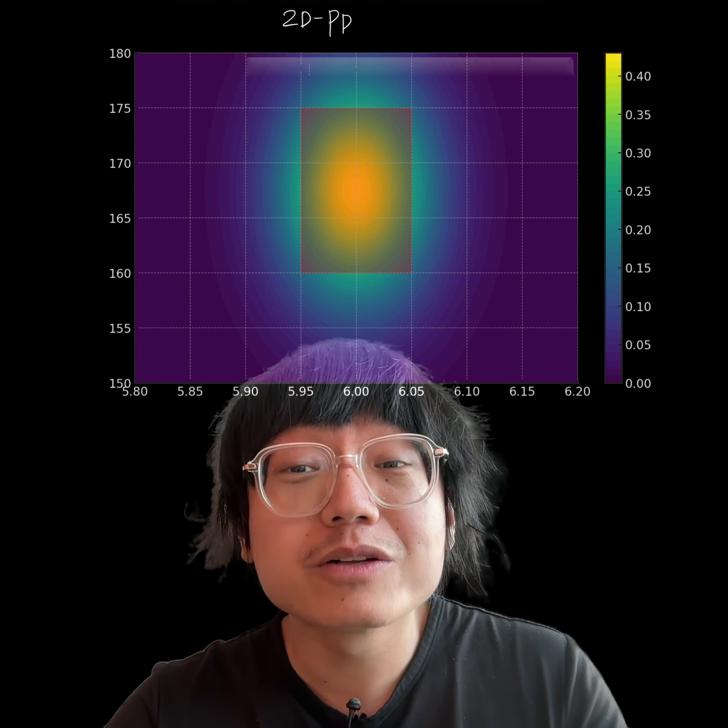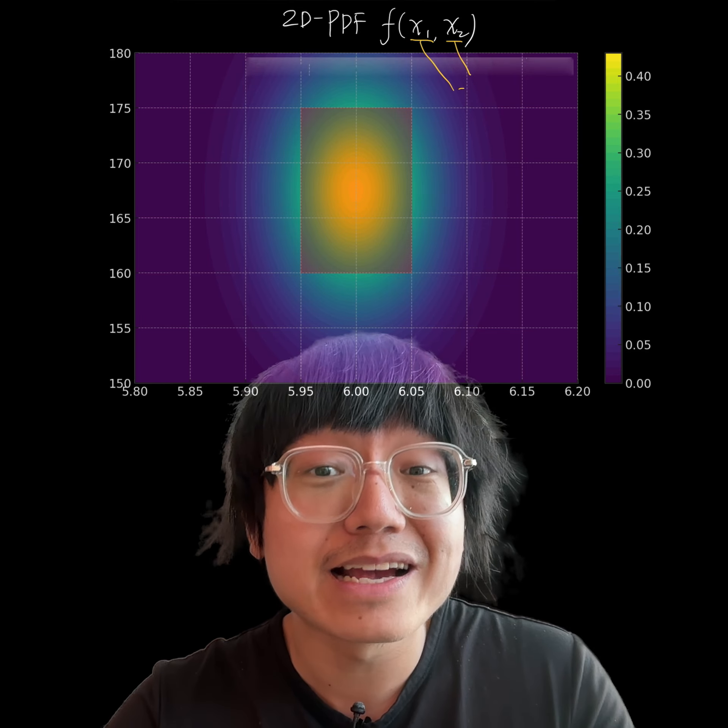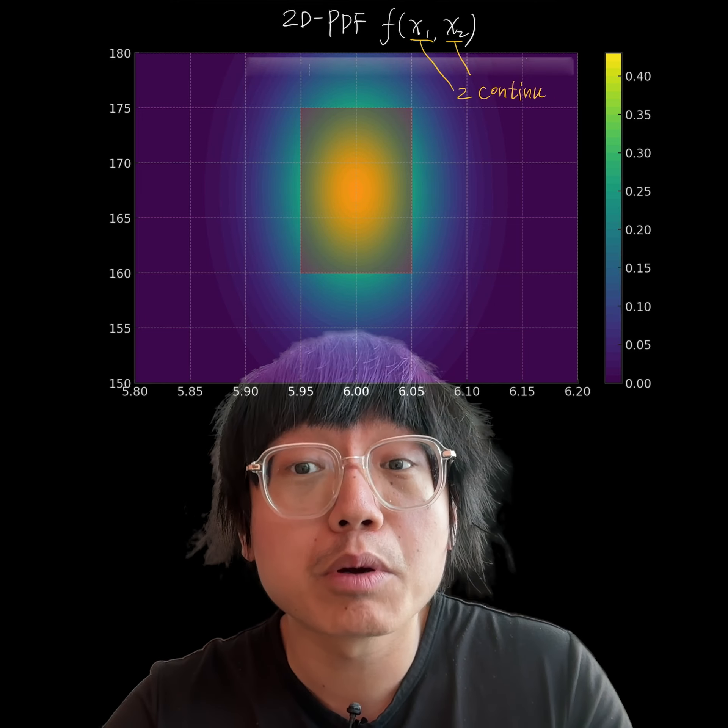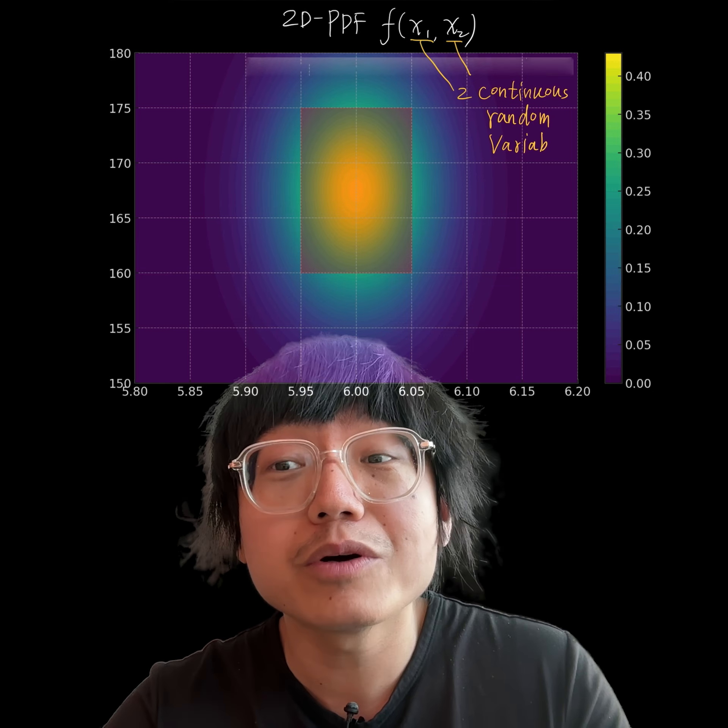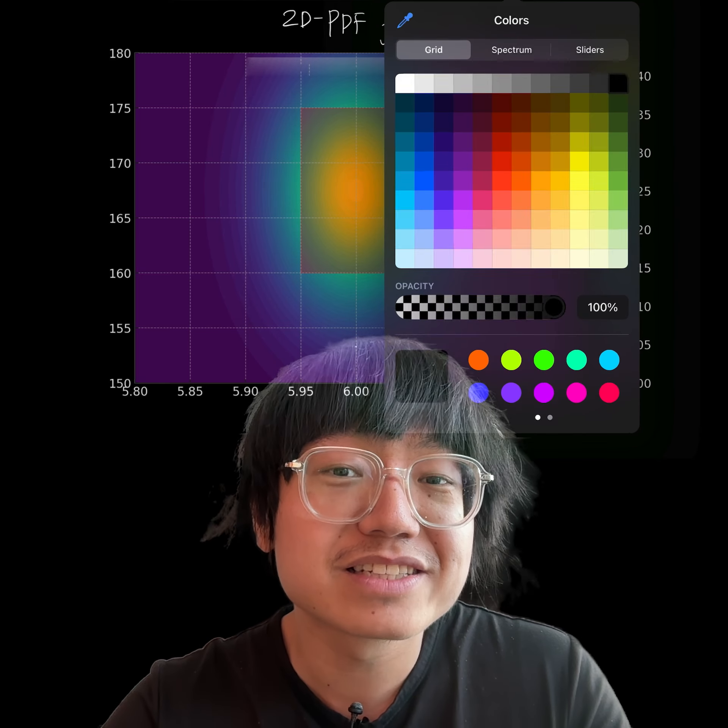In today's video, I'm going to talk about the concept of using two-dimensional probability density function f of x1 and x2 for calculating the joint probability of two continuous random variables, height and weight in this case.